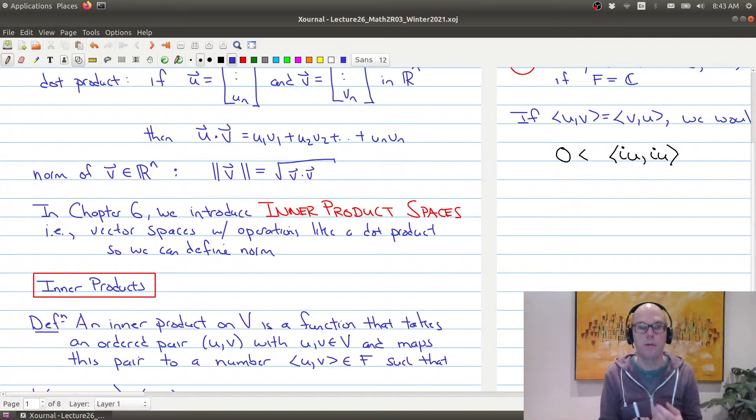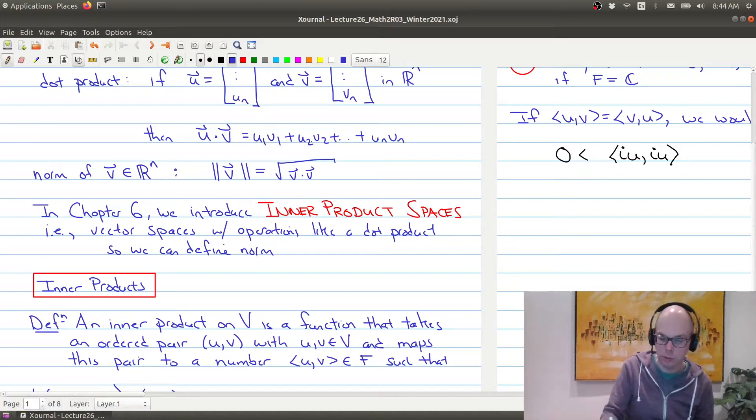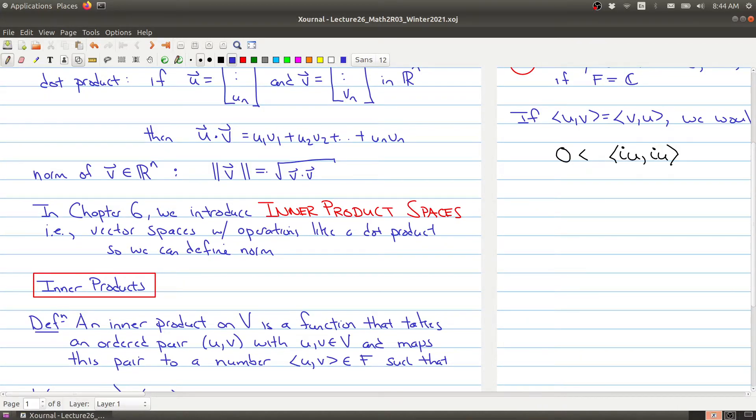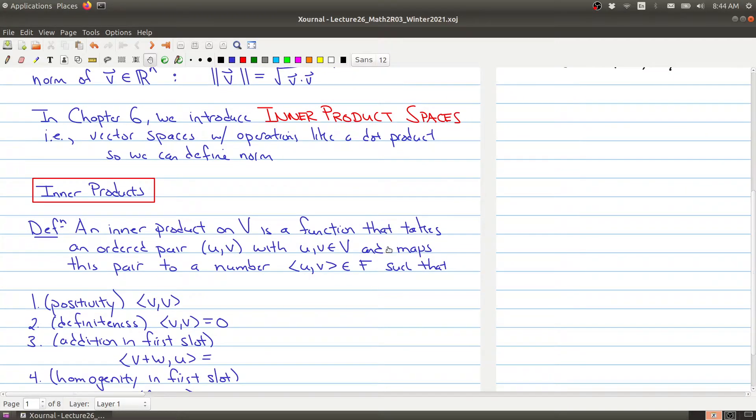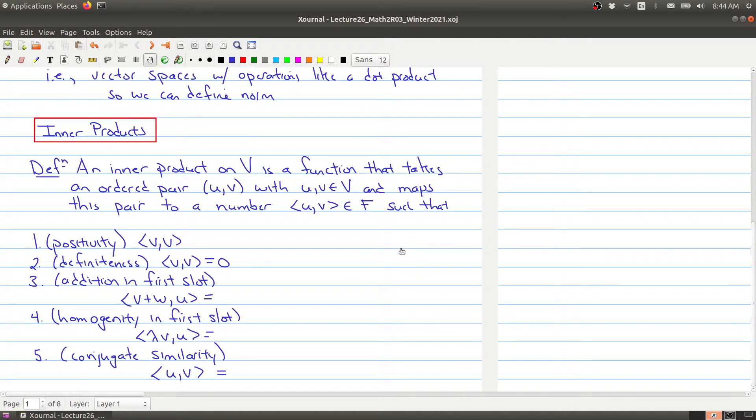That's our goal in Chapter 6, to define vector spaces with a special type of operation called an inner product, and then once you have an inner product, you can define a norm. So let me make myself disappear, and we'll actually first start by defining the type of operations that we're interested in. And those operations are called inner products. An inner product on a vector space is a function that takes an ordered pair, so ordered is important here...